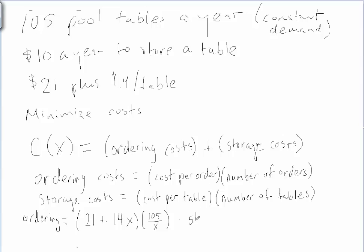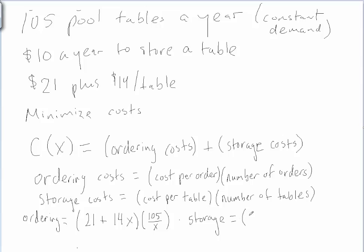Those are our ordering costs. And the storage costs is going to be $10 per year times the average number of tables we'll have in storage at any one time. So this is our cost function.